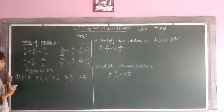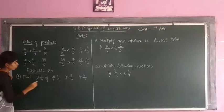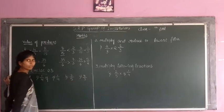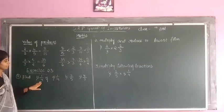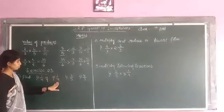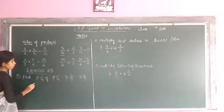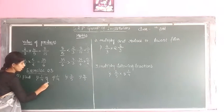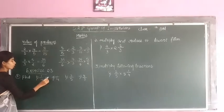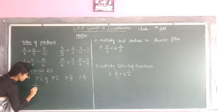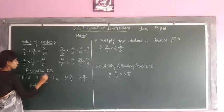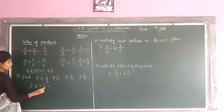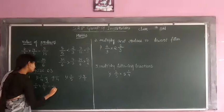Next is Exercise 2.3. The first question is: find 1/4 of (A) 1/4, (B) 3/5, and (C) 4/3. We know that 'of' works as a multiplication operator. So for part A, 1/4 of 1/4 means 1/4 multiplied by 1/4. Numerator into numerator, denominator into denominator — that gives us 1 by 16.